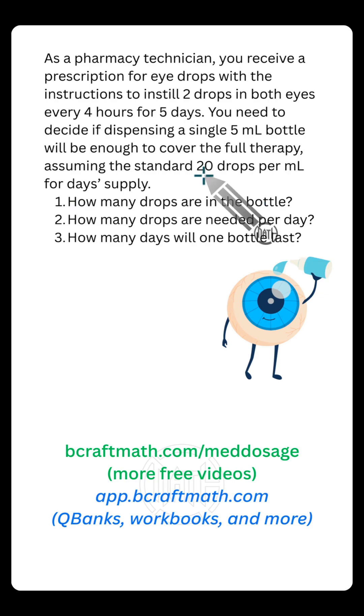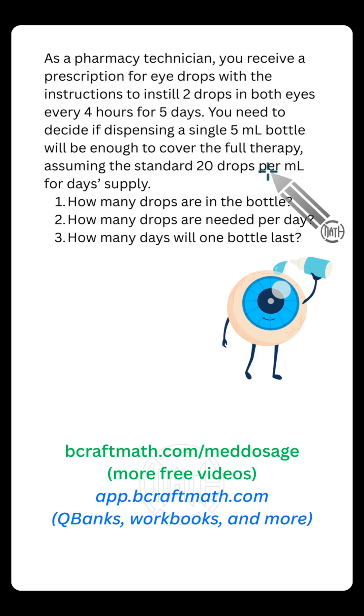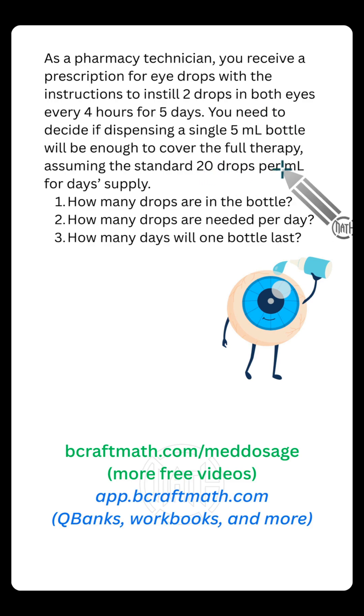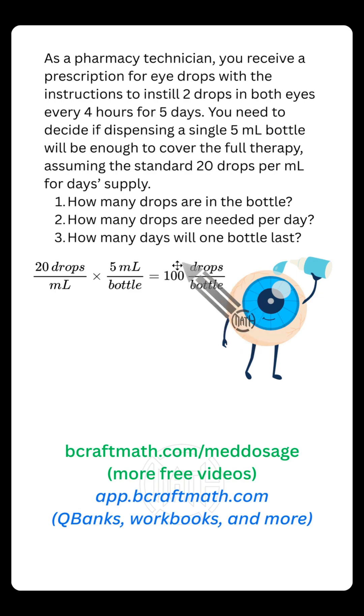In this particular eye drop bottle, there are 20 drops per one milliliter. We have a five milliliter bottle, so 20 drops per milliliter times five milliliters gives us 100 drops per bottle.